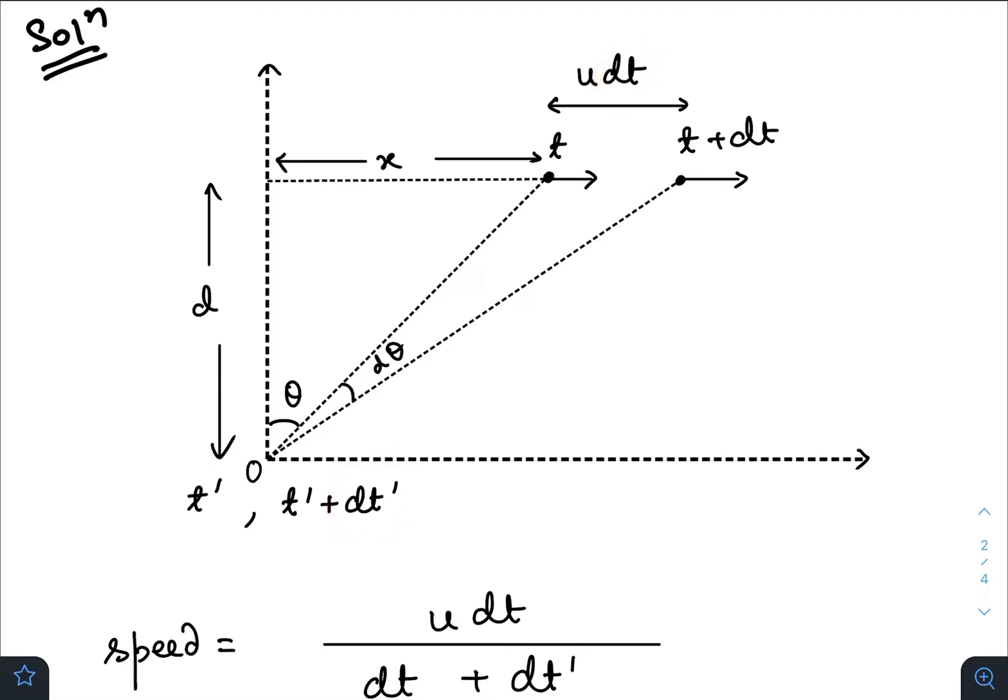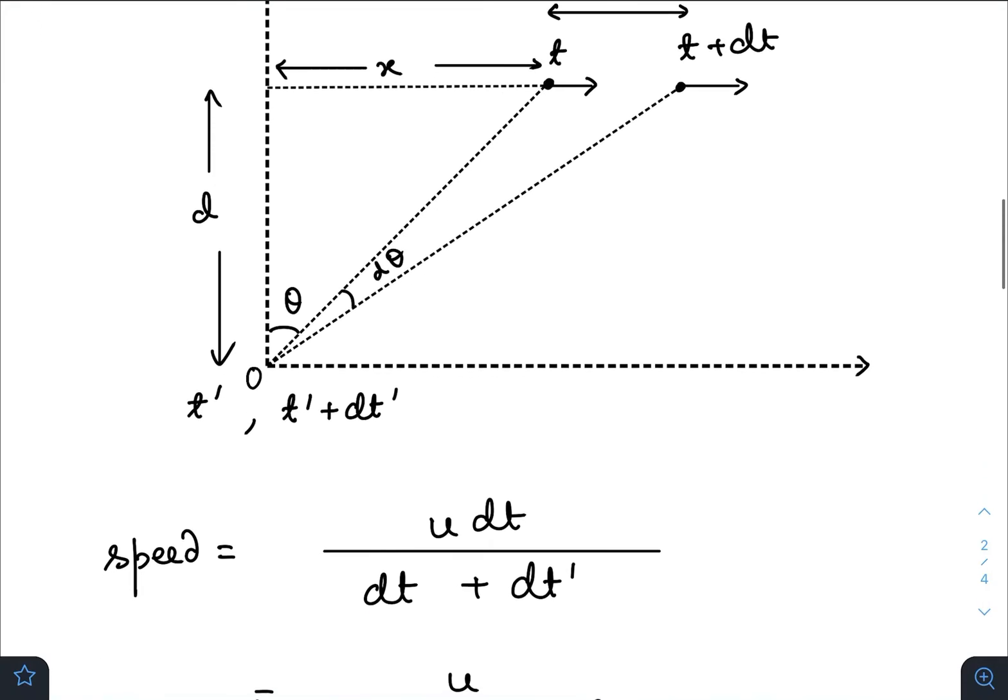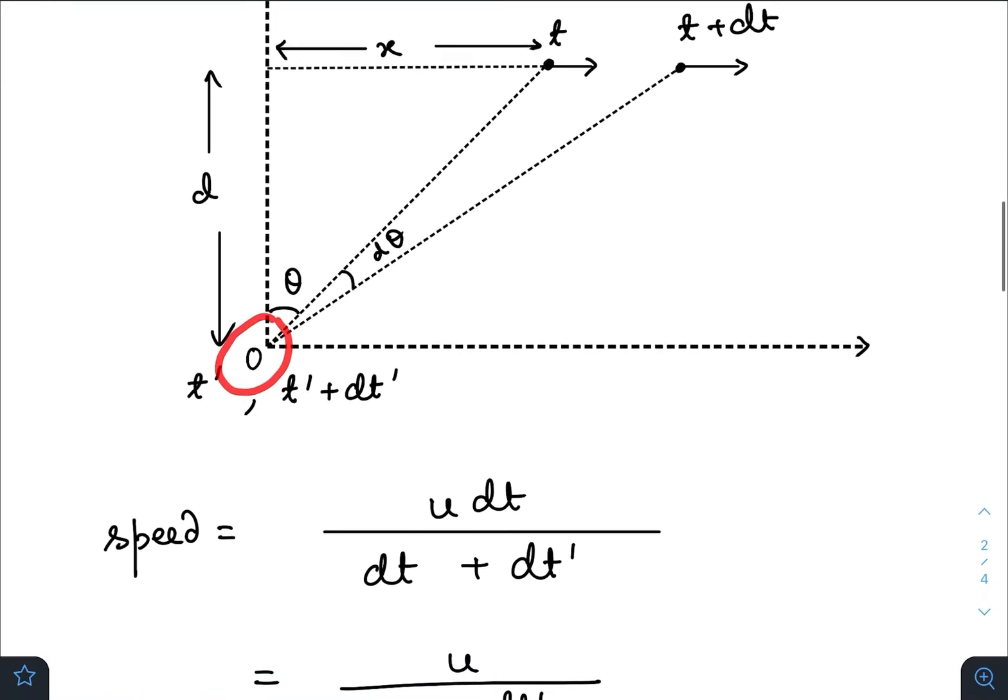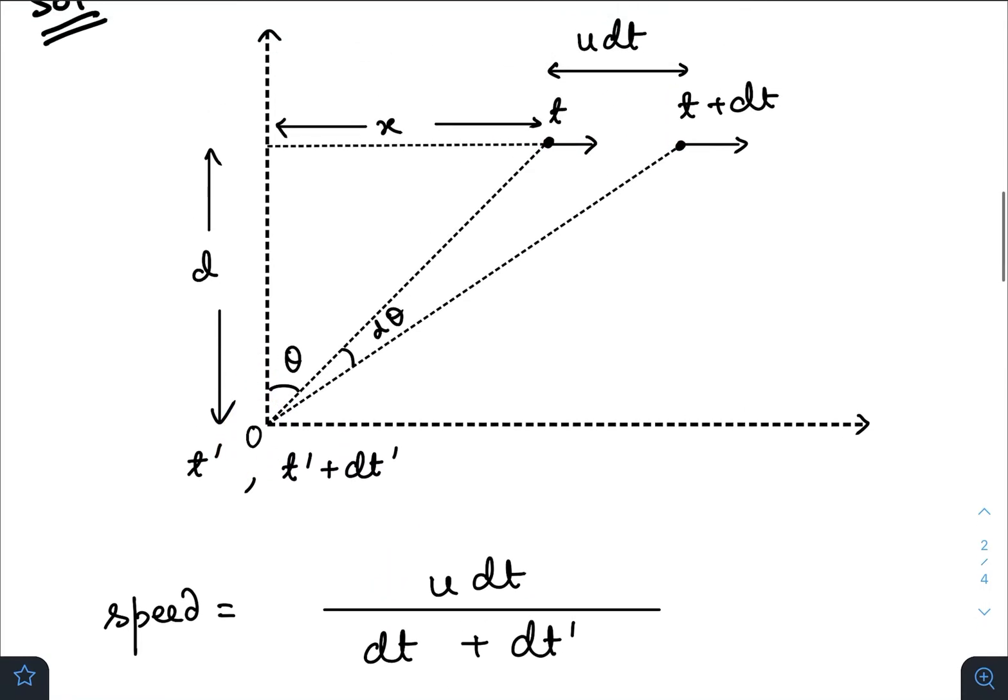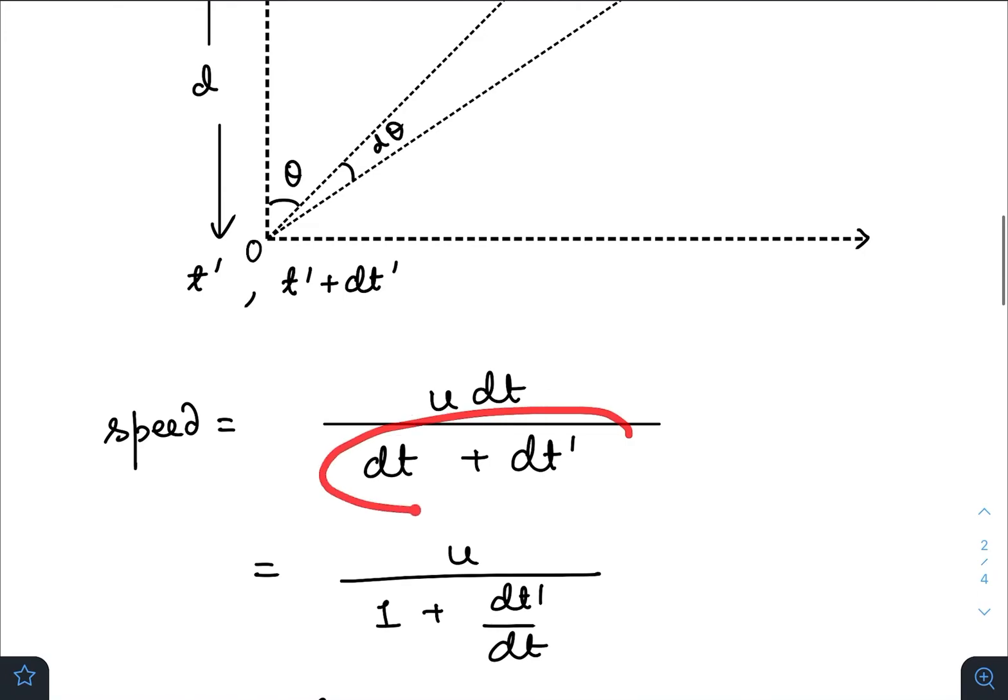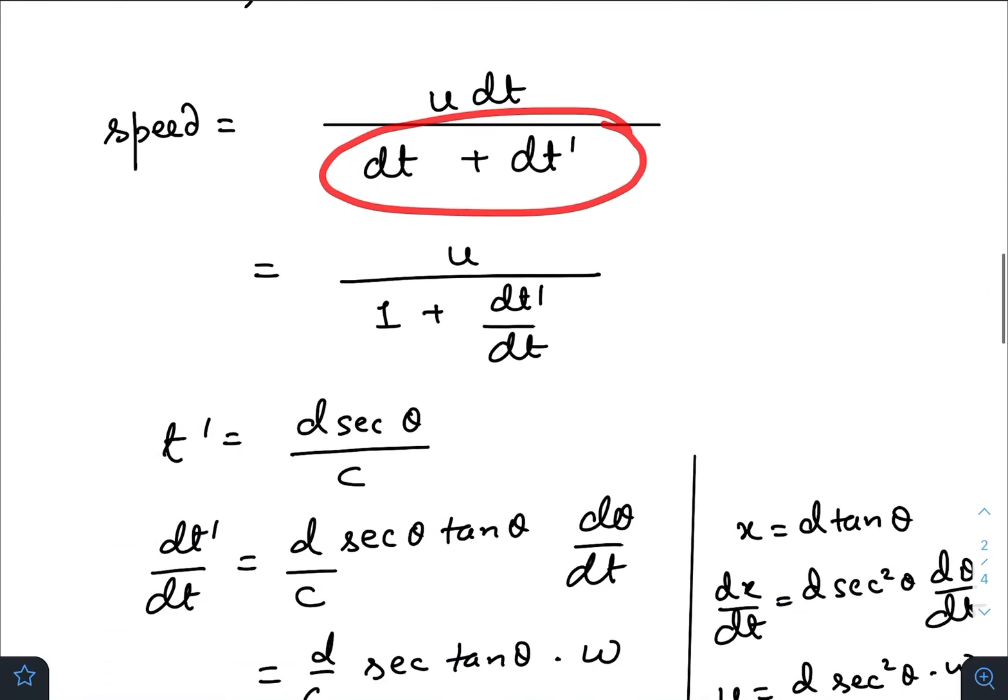So the speed measured by this observer of the UFO is the distance traveled, that is u dt, divided by the total time registered in the clock of observer O, that is dt plus dt prime. Dividing numerator and denominator by dt, we get this expression.